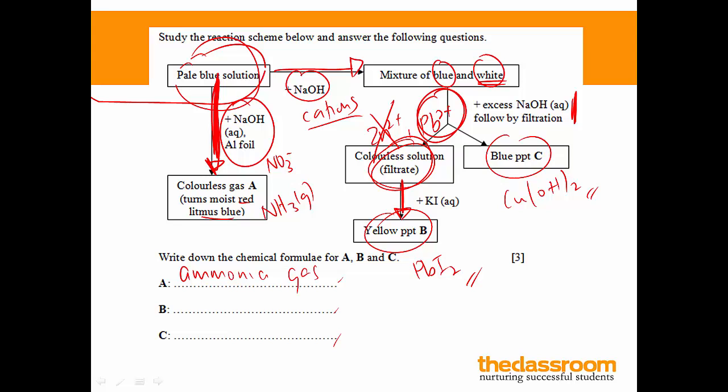And then B, lead 2-iodide. And finally C, copper 2-hydroxide. So if you are not too sure, you can rewind this video and watch it again. If not, we're going to move on to the second example.